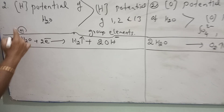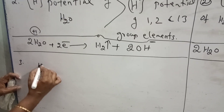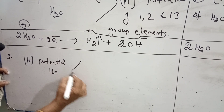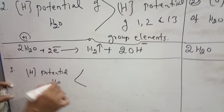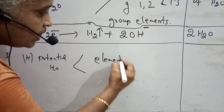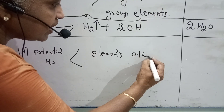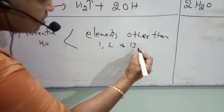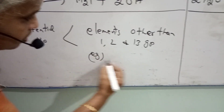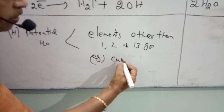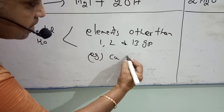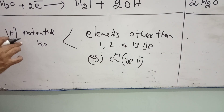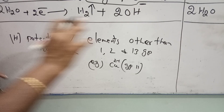The third condition is: the reduction potential of water is less than the reduction potential of elements other than first, second, and thirteenth group. For example, copper belongs to group 11. If you are having copper and water, copper will be getting reduced.